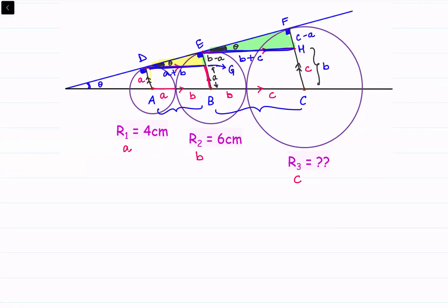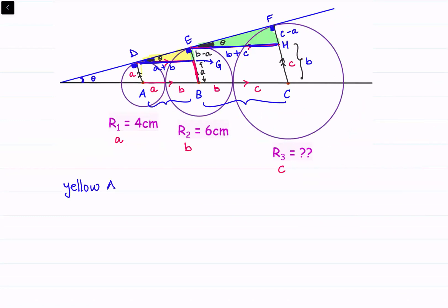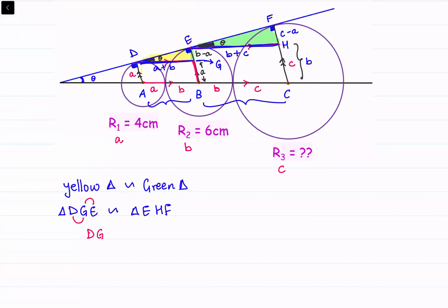The yellow triangle DGE is similar to the green triangle EHF. Since the triangles are similar, the ratios of corresponding sides are equal. Taking corresponding sides: DG over GE equals EH over HF. Substituting: DG is a plus b, GE is b minus a, EH is b plus c, and HF is...